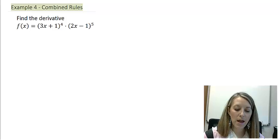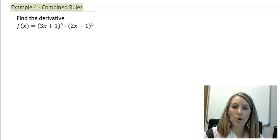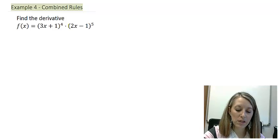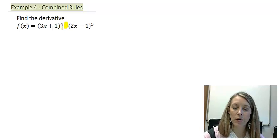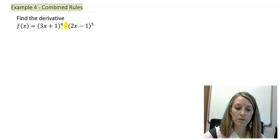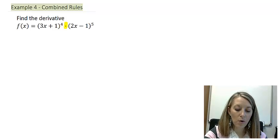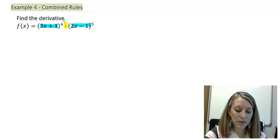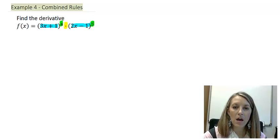Here I have (3x + 1) to the fourth times (2x − 1) to the fifth. We first need to identify which of the larger rules we need to use. First, we see there is a multiplication, so obviously we're going to have to do a product rule. But we also see some inside pieces and outside pieces, so we're going to have to do a chain rule.